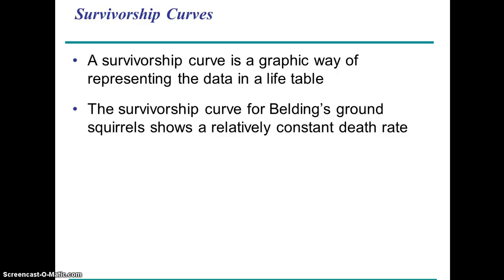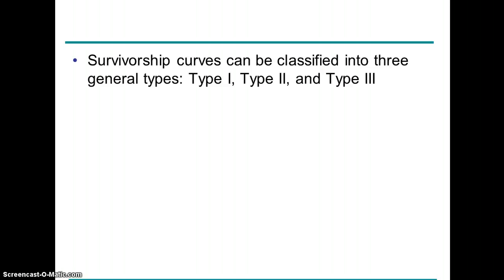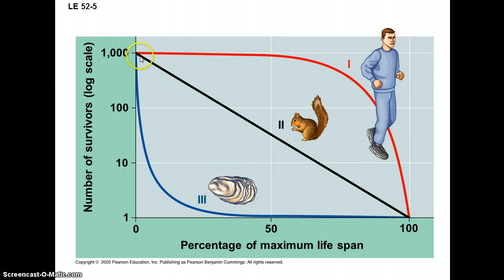Survivorship curves are another way of looking at populations. With these squirrels, age is on the x-axis and number remaining on the y-axis. There's a fairly straight-line decline, a little steeper for the males. All are present at the beginning, but there's a fairly steep drop-off — by about five years most of the males have died, and by nine years all the females. The squirrels have what we call a type 2 survivorship curve — a fairly linear decline where mortality is consistent throughout the various stages of life.